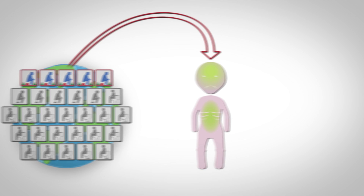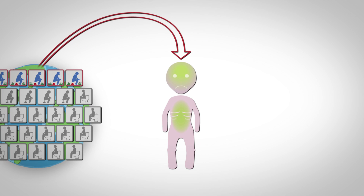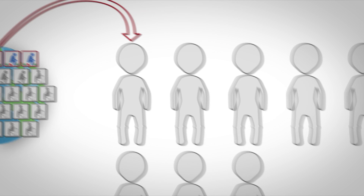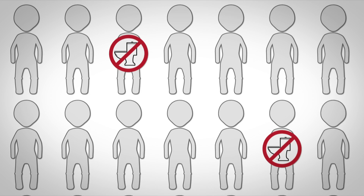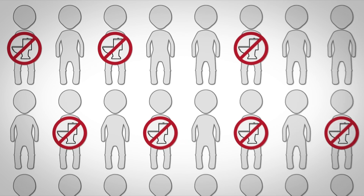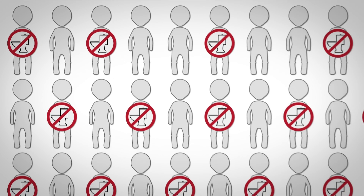Every year, more than three million children under the age of five die due to undernutrition. Some of these deaths are directly attributable to poor sanitation and hygiene conditions.